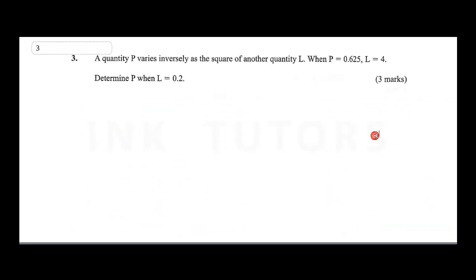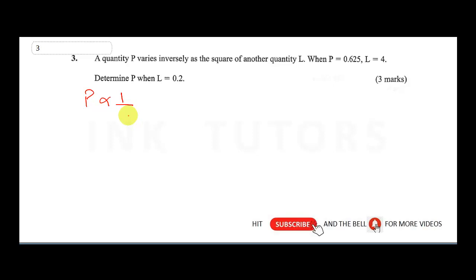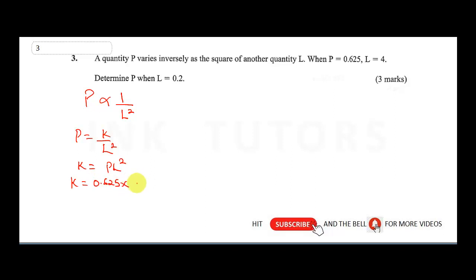Question 3 says p varies inversely as the square of another quantity l. Remember, inverse variation means when p is increasing the other quantity is decreasing. Since it's inverse variation, we write p = k / l², which means k = p × l².